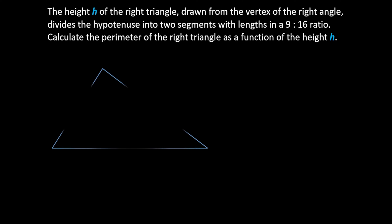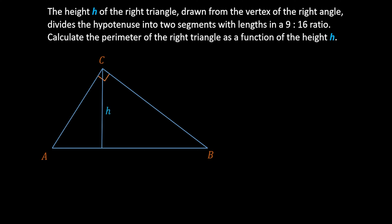Let us draw the right triangle ABC, with the right angle at vertex C. From C, we draw down the height h of the triangle, which will intersect the hypotenuse at point D. We can say that segment AD is equal to M and segment DB is equal to N. The ratio between M and N is equal to 9 to 16.